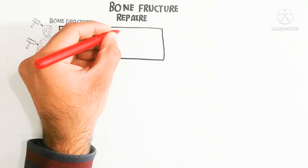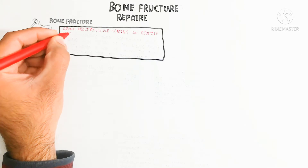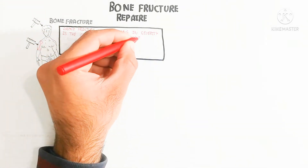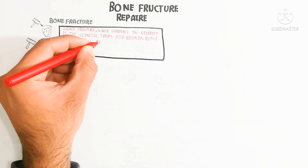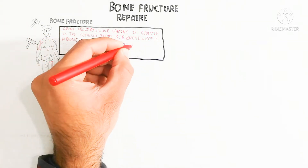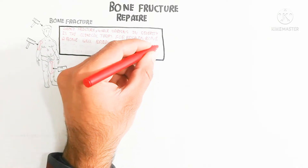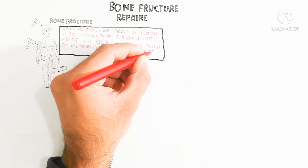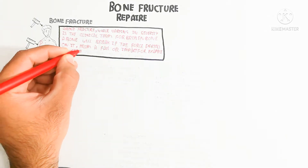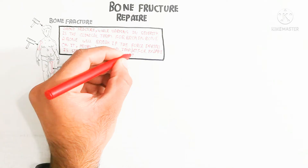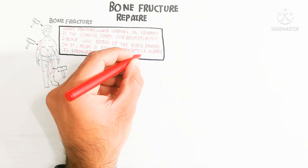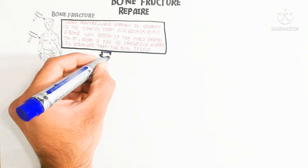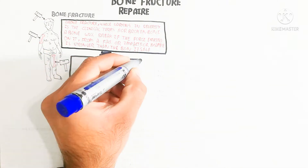A bone will break if the force exerted on it from a fall or impact is stronger than the bone itself. Soon after the bone breaks, it undergoes a natural healing process. There are five stages of the fracture healing process which we will discuss.